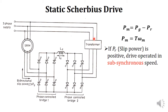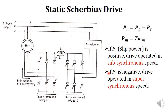Power flow from motor to supply mains is considered positive, and from supply mains to motor is considered negative. So if the slip power is negative, the drive operates in super-synchronous mode, because if Pr is negative then Pg − Pr increases, so Pm increases, speed increases, and it operates in super-synchronous speed.